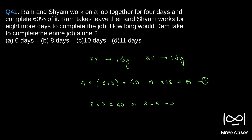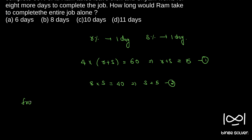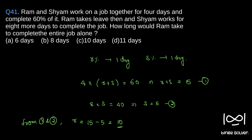From equations 1 and 2, we have R equal to 15 minus 5, that is 10. So we got R is 10.